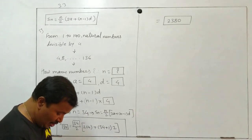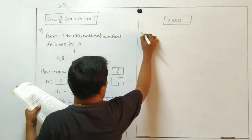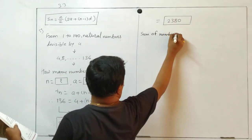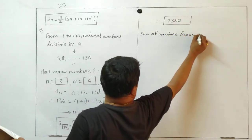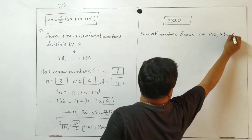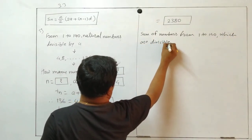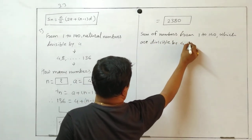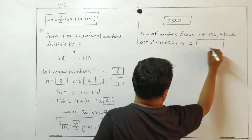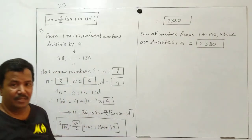So the sum of numbers from one to one forty which are divisible by four is two thousand three hundred and eighty.